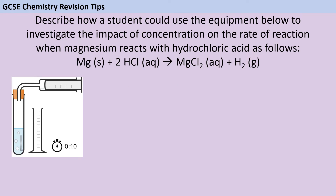This question is about one of the required practical activities for GCSE chemistry, but this required practical is really two separate investigations. You need to be able to describe how to calculate the rate using one method that involves collecting gas and a separate method that involves measuring turbidity. In this question we're given a clear indication of which half of the practical this is about because they've given us a diagram showing a gas syringe. They've also given a chemical symbol equation, and you can see that there is a gas being produced. If I was looking for a turbidity question, I would see a solid being produced. The hydrogen gas here tells us we're going to be collecting gas.